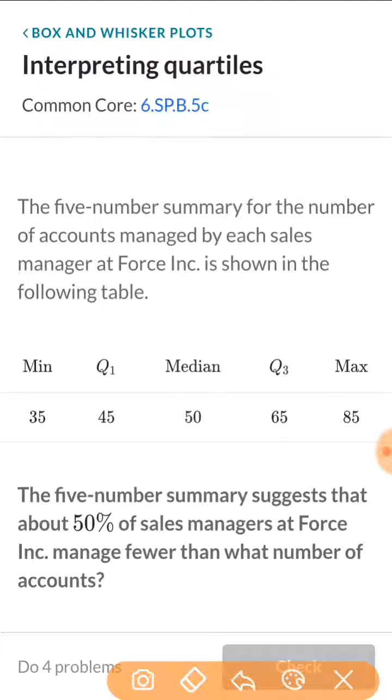So again, because these are quartiles, we know that 25% of your data is between 35 and 45. 25% of your data is between 45 and 50. 25% of your data is between 50 and 65. And 25% of your data is between 65 and 85.